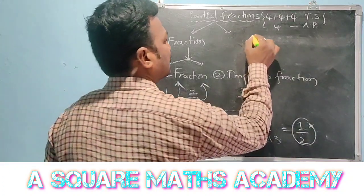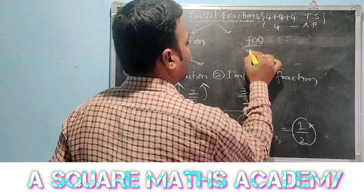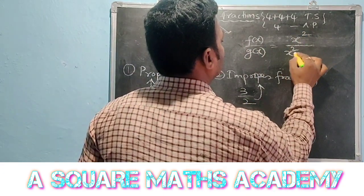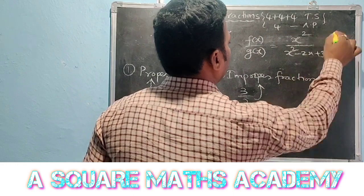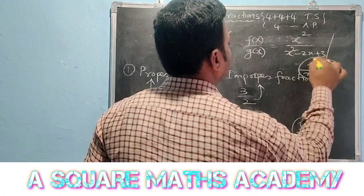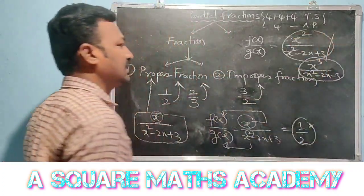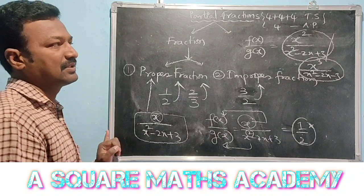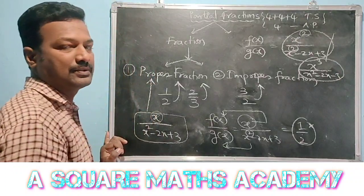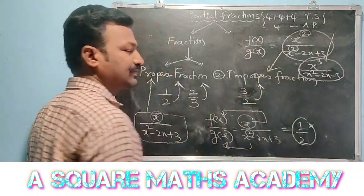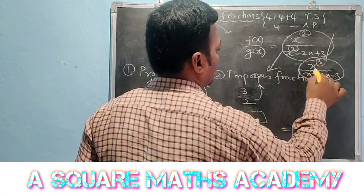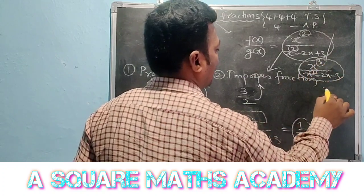Suppose f of x by g of x equals x squared by x squared minus 2x minus 3, or x cubed by x squared minus 2x minus 3. In the first case, the degree of f of x is 2 and the degree of g of x is also 2 — both are the same, so this is an improper fraction. In the second case, the degree of f of x is 3 and degree of g of x is 2 — that is the 3 by 2 form, so this is also an improper fraction.